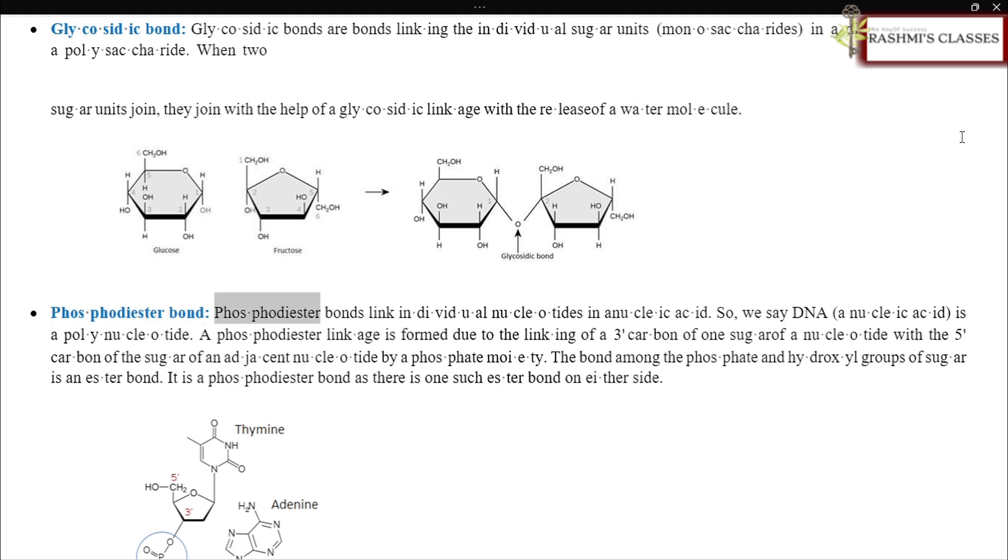Phosphodiester bond. Phosphodiester bonds link individual nucleotides in a nucleic acid. So we say DNA, a nucleic acid, is a polynucleotide. A phosphodiester linkage is formed due to the linking of a three-foot carbon of one sugar of a nucleotide with a five-carbon of the sugar of an adjacent nucleotide by a phosphate moiety. The bond among the phosphate and hydroxyl groups of sugar is an ester bond. It is a phosphodiester bond as there is one such ester bond on either side.